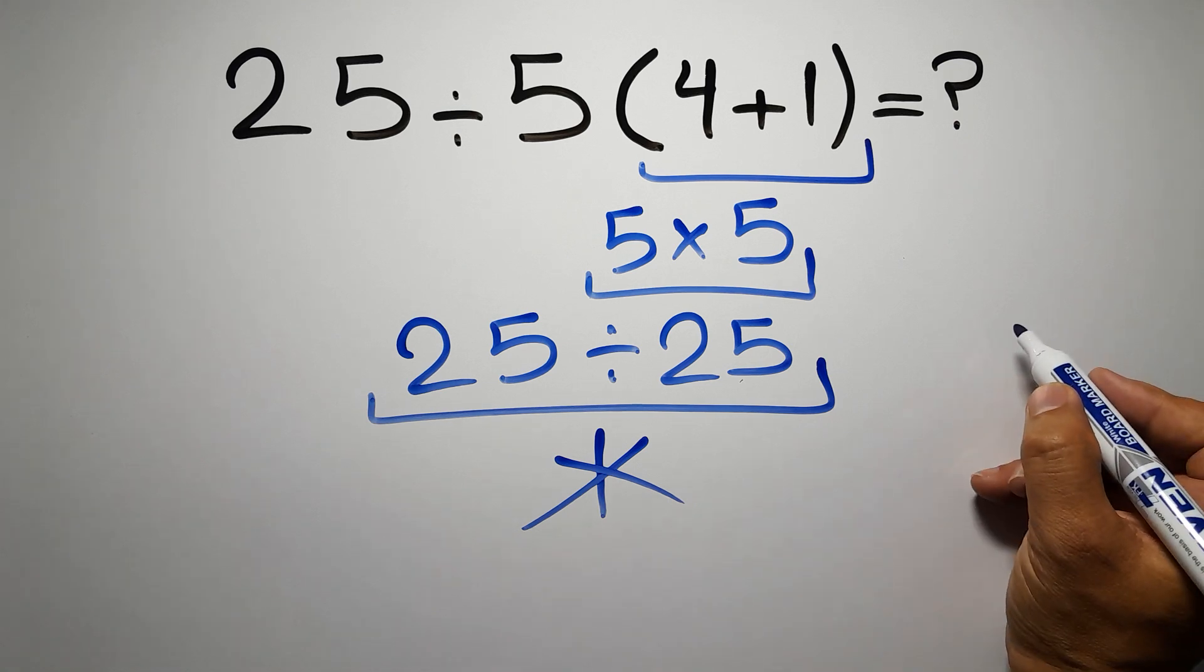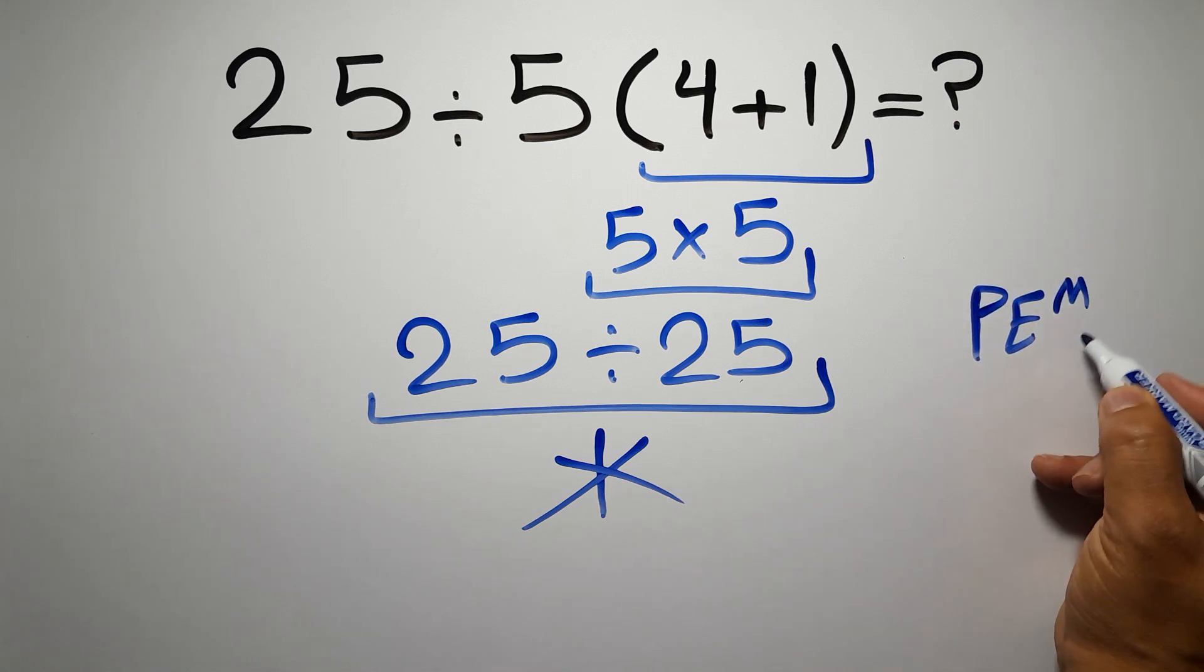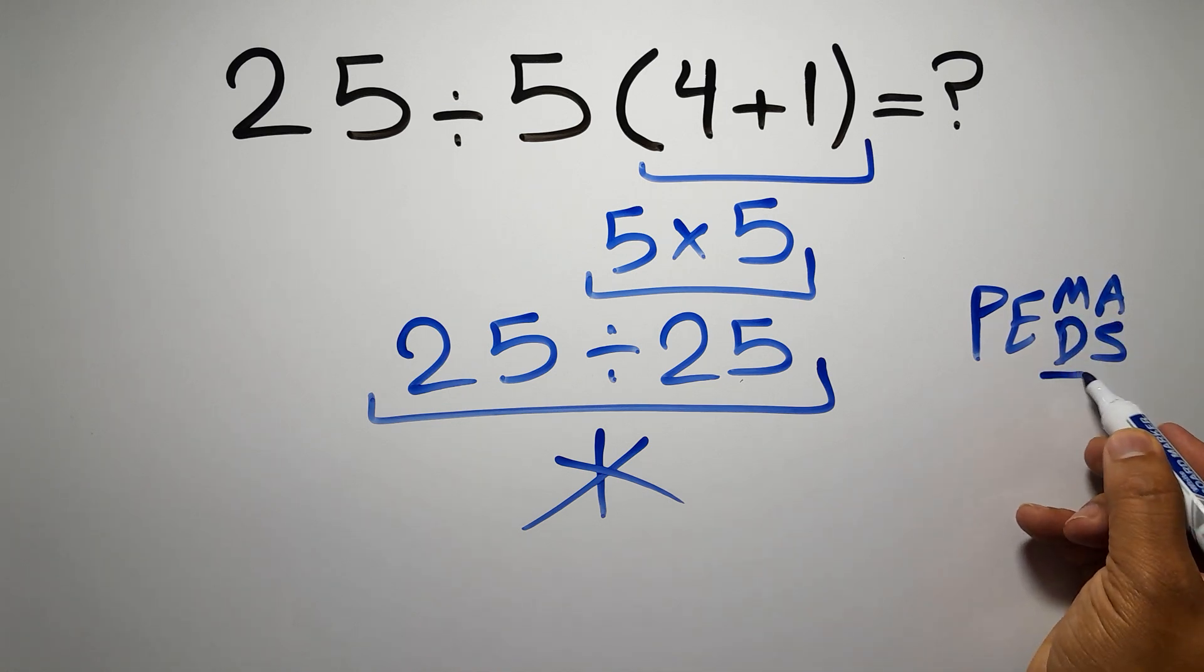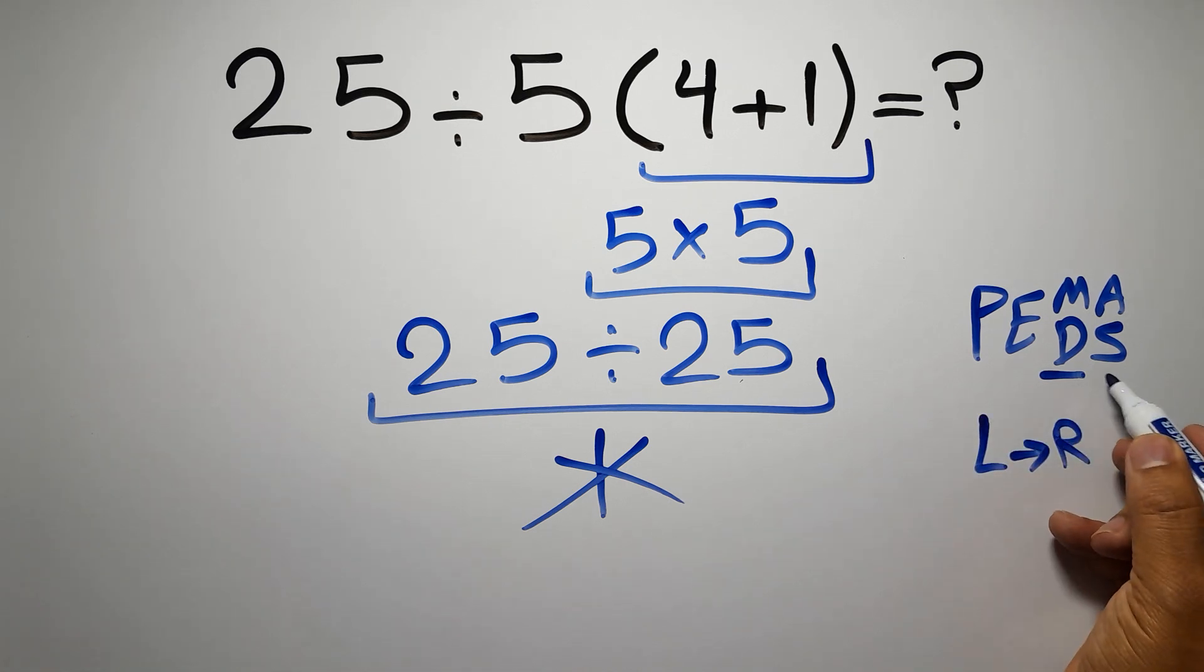First we have to do parentheses, then exponents, then multiplication or division, and finally addition or subtraction. Remember that multiplication and division have equal priority and we have to work from left to right, and the same applies to addition and subtraction.